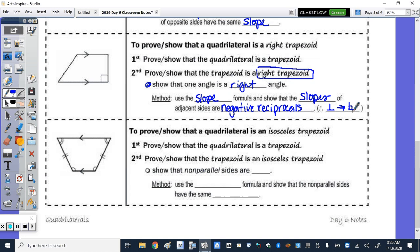And then last, to prove we have an isosceles trapezoid, well, we're first going to prove that it is a trapezoid. And then we're going to show it's isosceles. And to do this, we show that the non-parallel sides or the legs are congruent. To show congruency, we use the distance formula and show that the non-parallel sides have the same length.